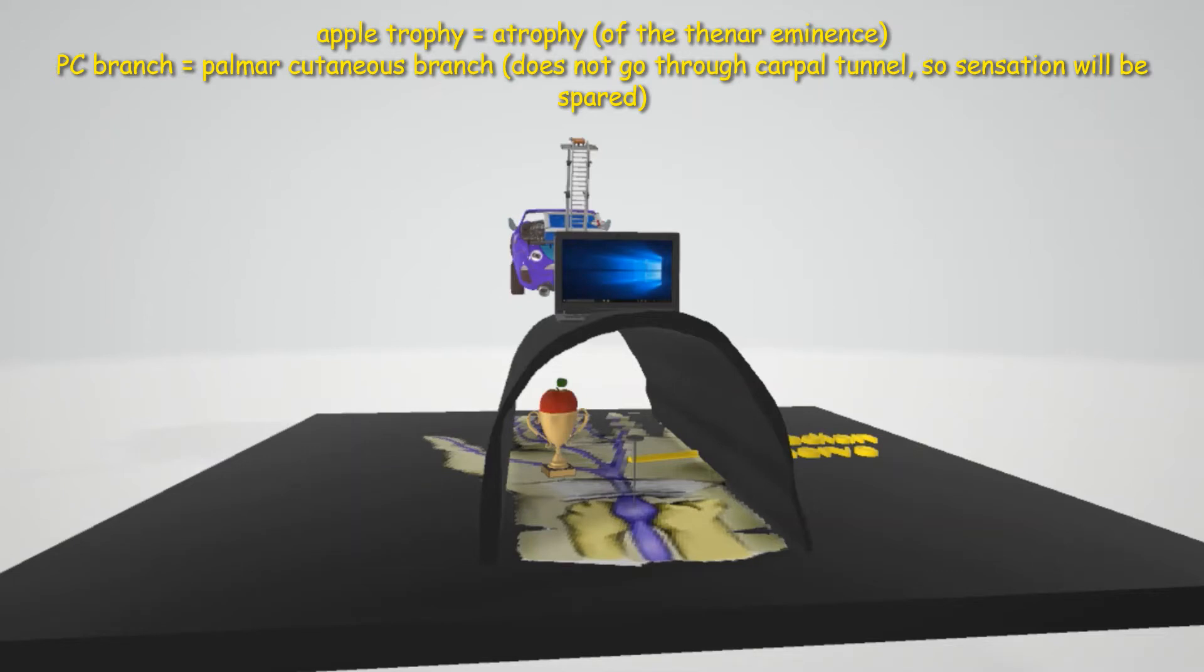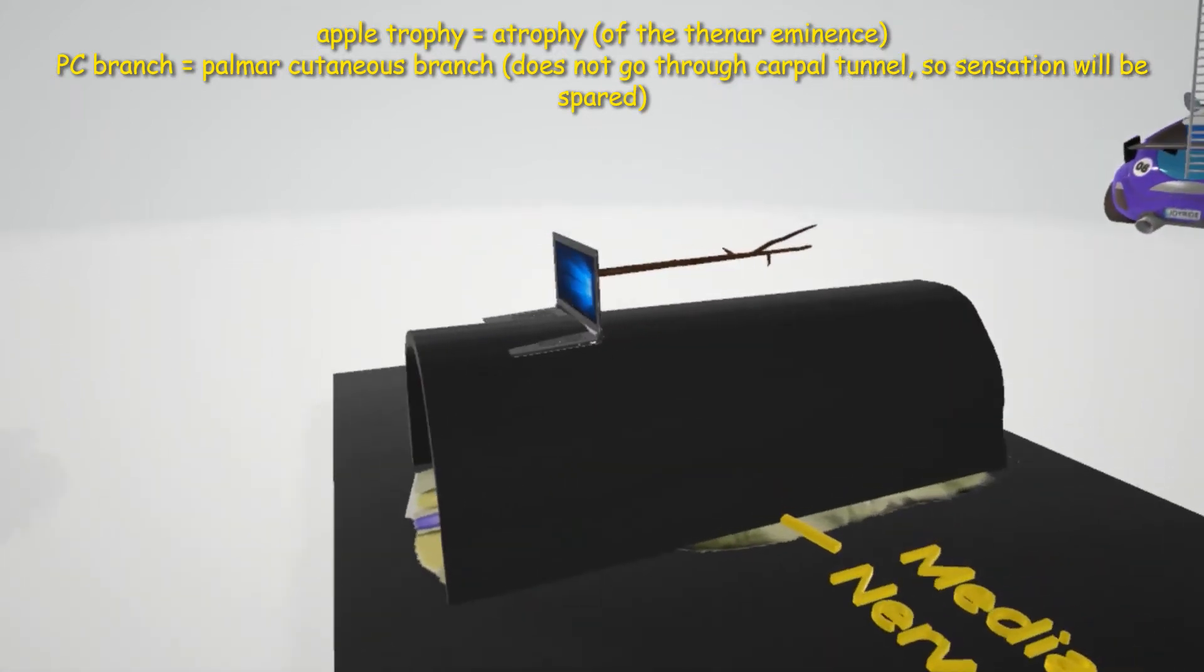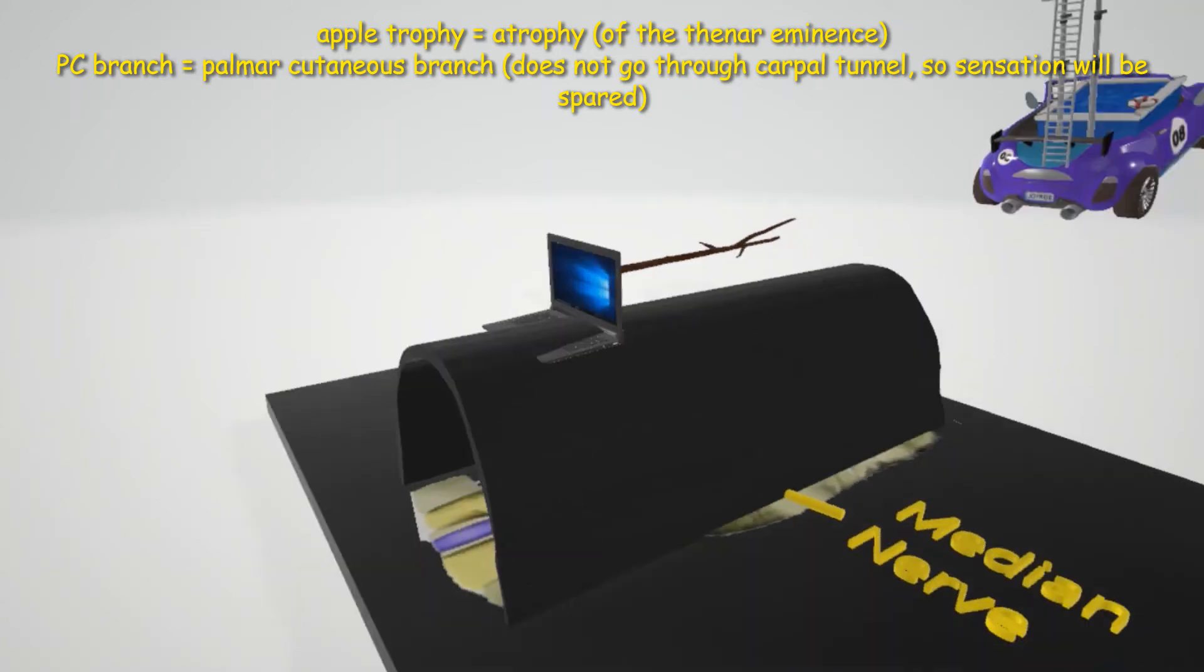This is because the median nerve supplies the thenar eminence, so when the median nerve is compressed, it leads to atrophy of the thenar eminence. However, there's this PC on here with the branch—the PC branch, or the palmar cutaneous branch. This is not going to be affected because it does not go through the carpal tunnel; it goes outside of it, more superficial.